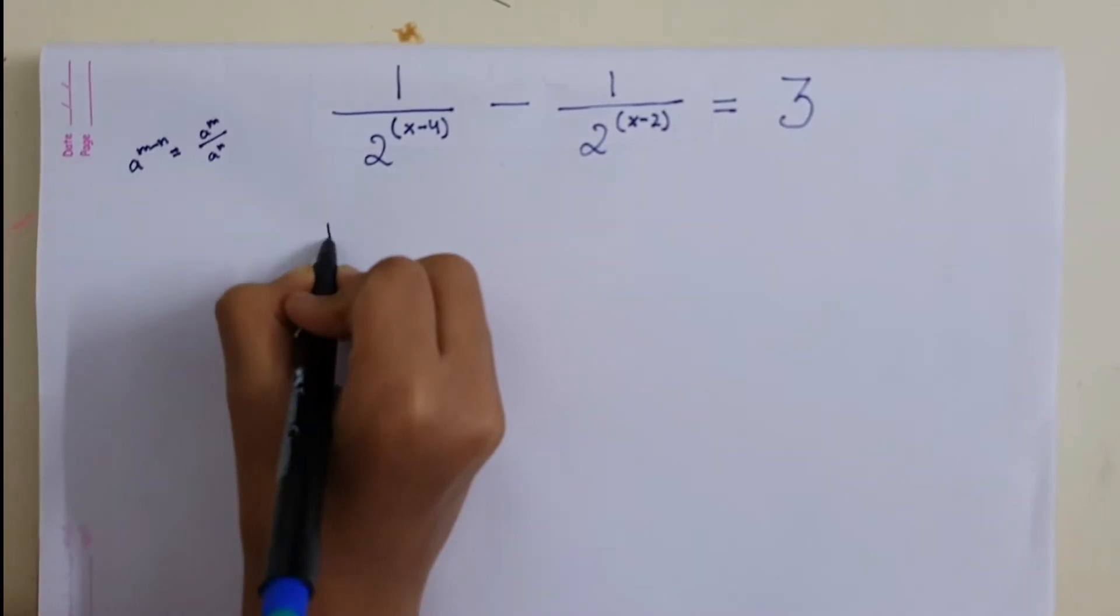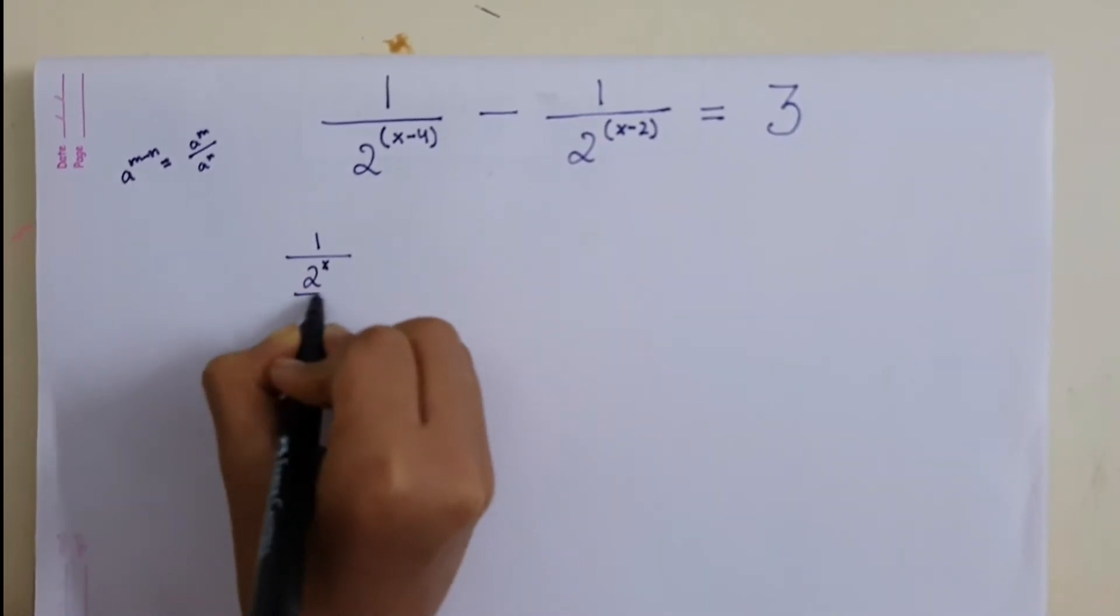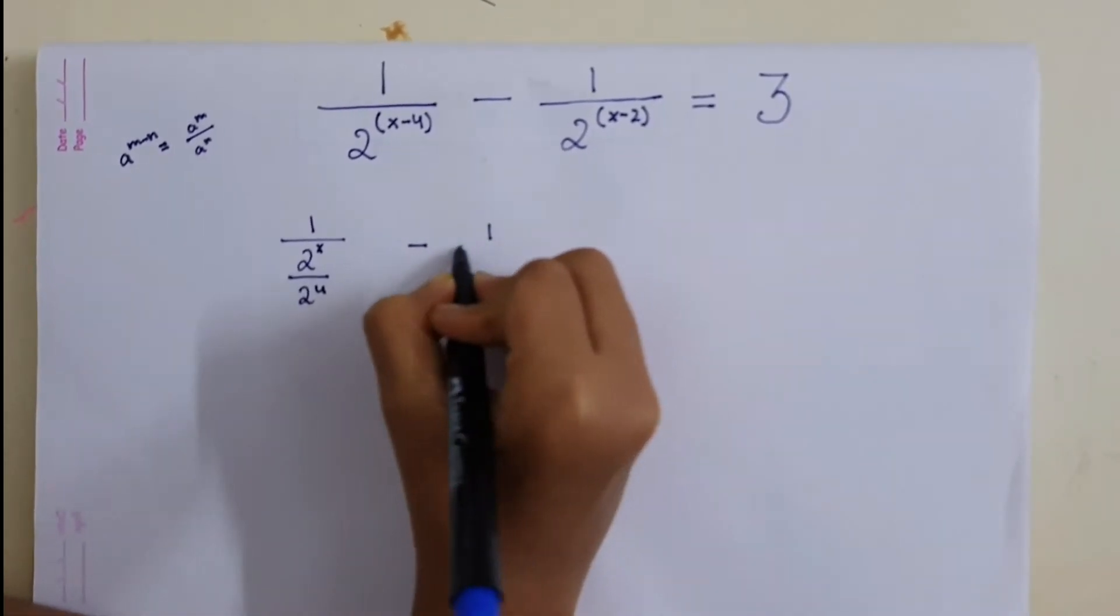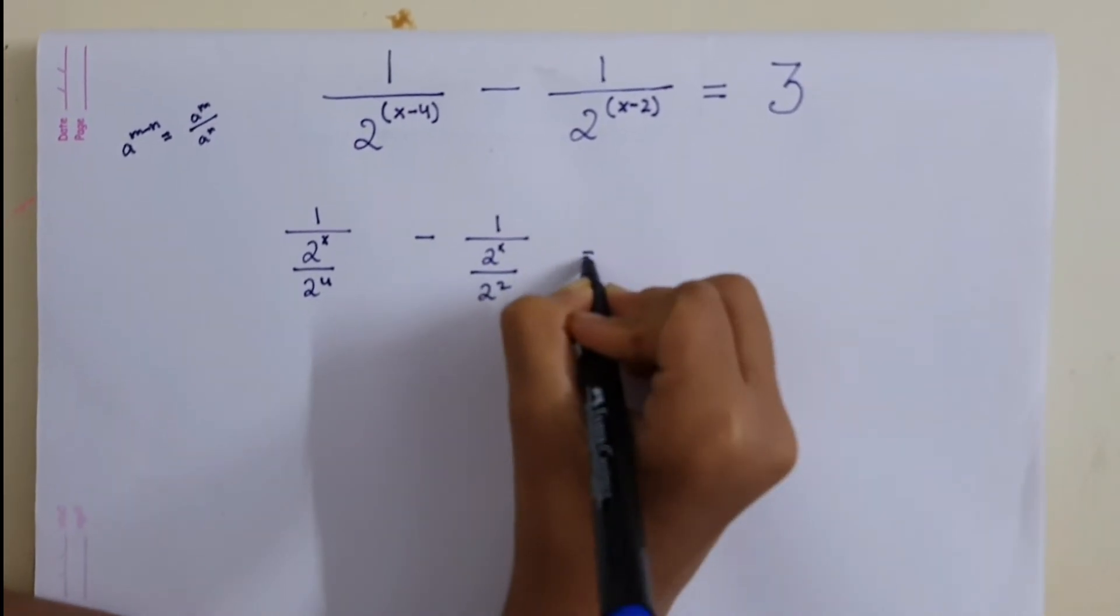So this is going to be 1 by 2 raised to power x by 2 raised to power 4 minus 1 by 2 raised to power x by 2 raised to power 2 equals to 3.